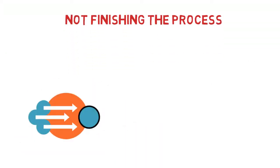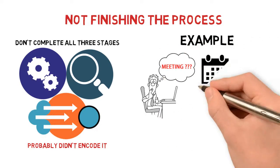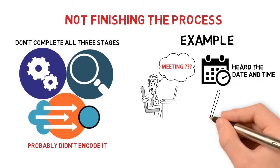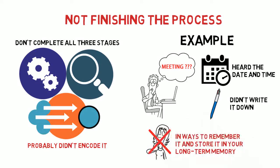Not finishing the process. If you don't complete all three of the stages to process memories, you probably didn't encode it in the first place. For example, if you forget an important business meeting, you likely just heard the date and time, but didn't write it down or think of it in ways to remember it and store it in your long-term memory.